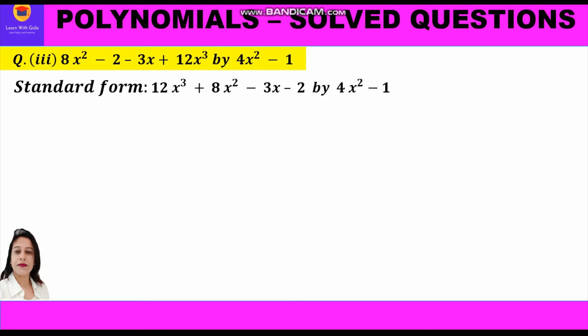So we write 12x³ plus 8x² minus 3x minus 2 to be divided by 4x² minus 1. We set up the problem: divisor 4x² minus 1 comes outside, and dividend 12x³ plus 8x² minus 3x minus 2 goes inside.